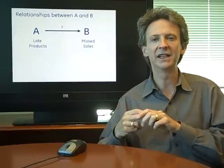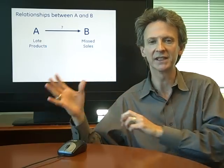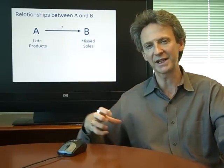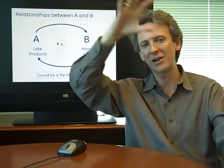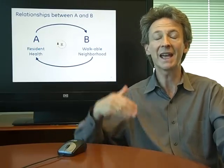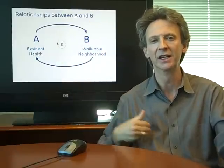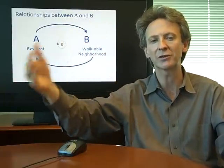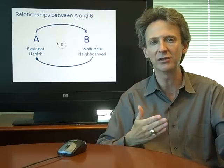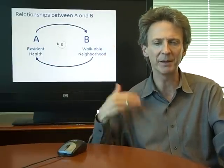A third kind of relationship is one we talked about in prior videos: late products cause missed sales. That's true — A causes B. But it can also be true that missed sales causes an organization to clamp down on hiring, so there are fewer developers, so products are even more late. So it's actually a reinforcing loop — A causes B, but B also causes A. An example from the articles may be the healthy resident and the walkable neighborhood. People that are healthy will tend to pick walkable neighborhoods. But it may also be true that in a walkable neighborhood it's easier to exercise, so it leads residents to be healthier. So this may be a positive reinforcing loop where they both feed off each other.